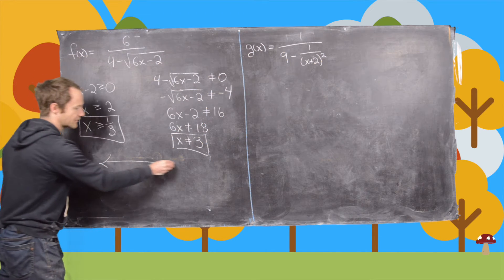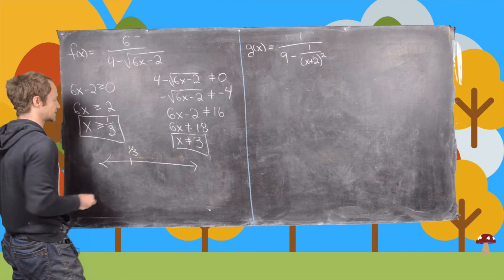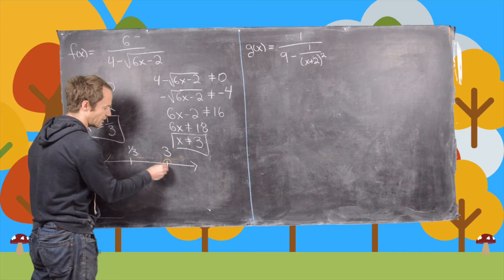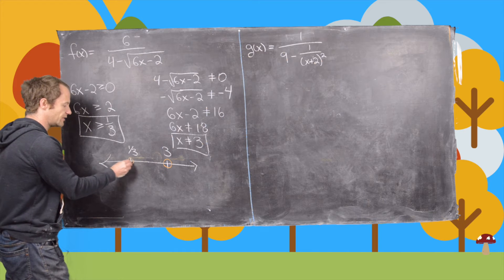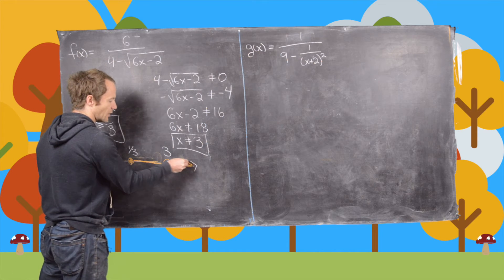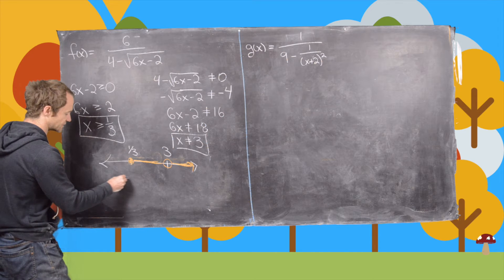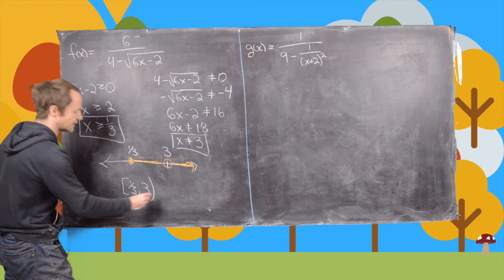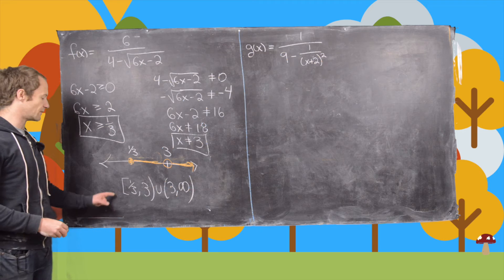Now let's graph that on the path to writing the domain in interval notation. We'll put 1 third and 3 as the important points. We put a bubble around 3 because we're not allowed to include it, and a solid dot at 1 third because we include it. We graph everything to the right of 1 third, skipping over 3. So the domain in interval notation is: 1 third to 3, not including 3, union 3 to infinity.